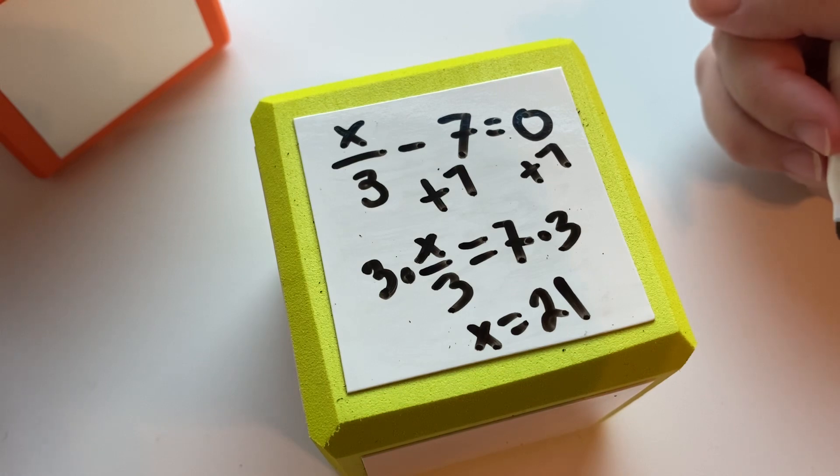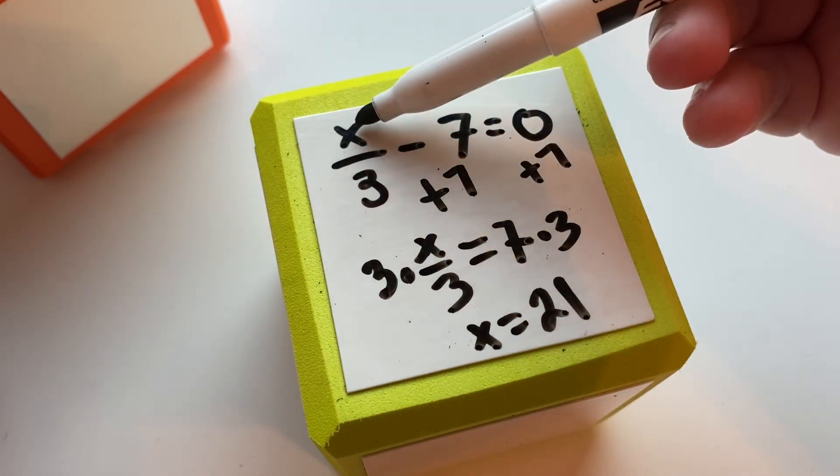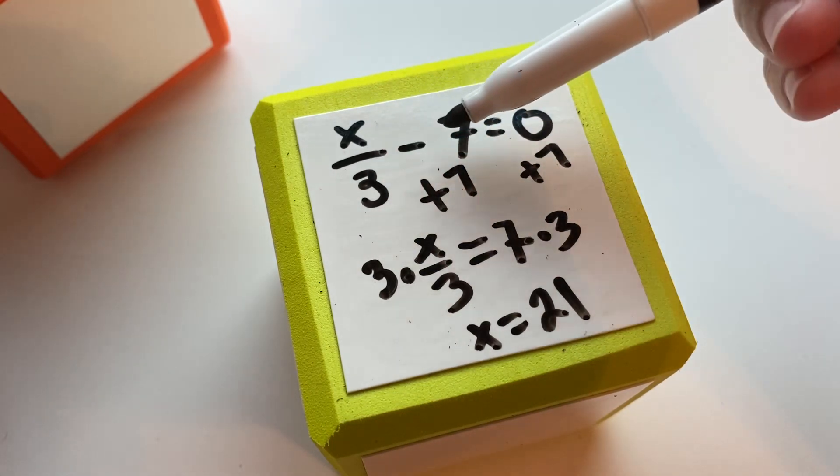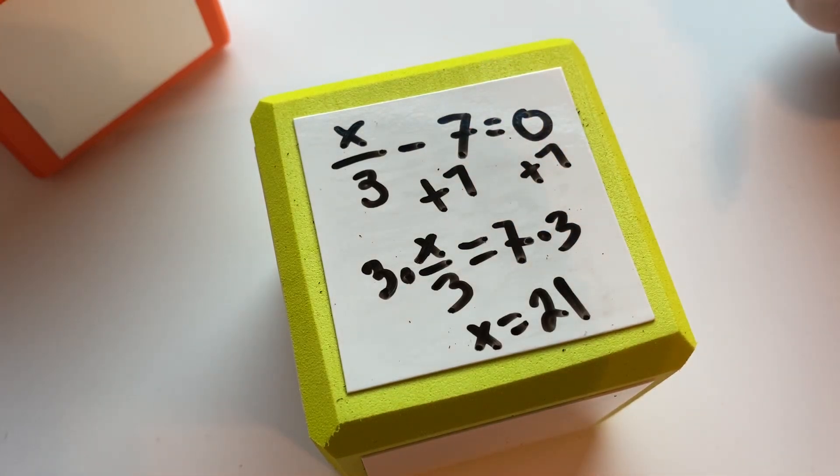And if you want to make sure that you did this correctly, you could take the 21, put it up here, 21 divided by 3 is 7, and 7 minus 7 is 0, and 0 equals 0. So yes, I did that correctly. That is a great way to check your work.